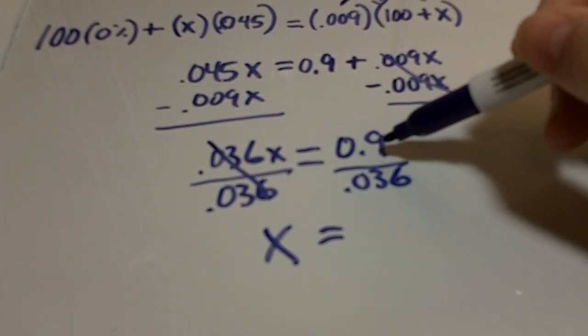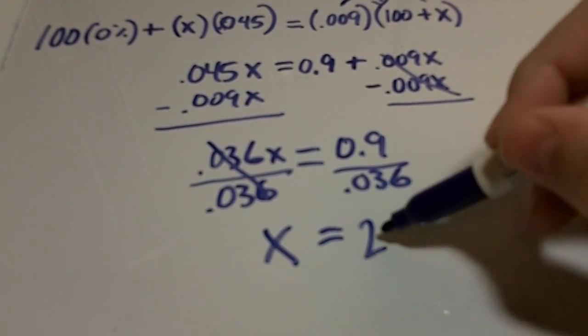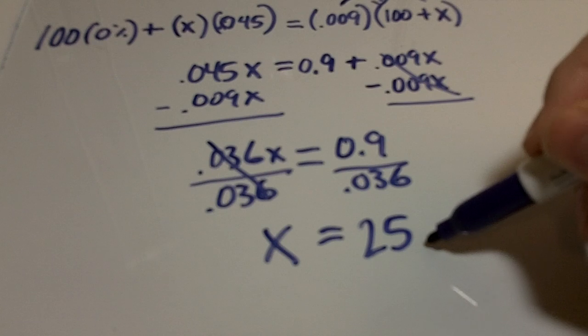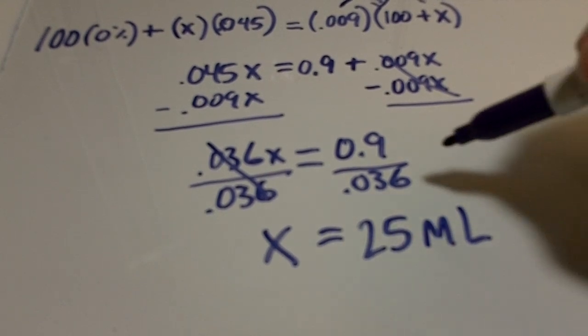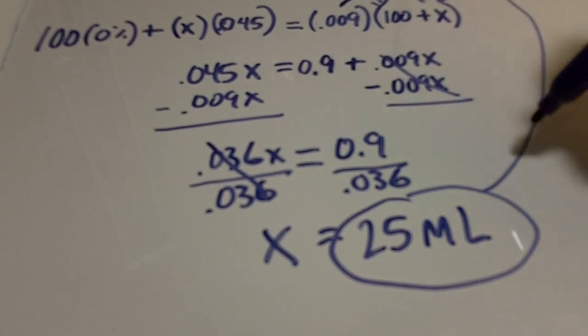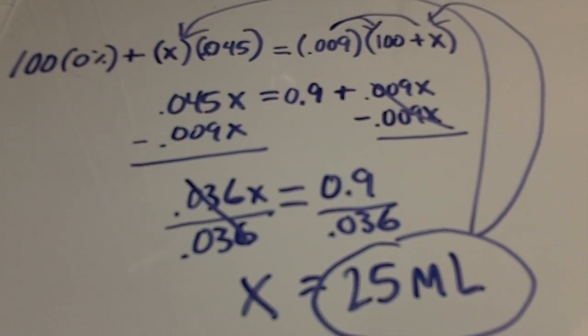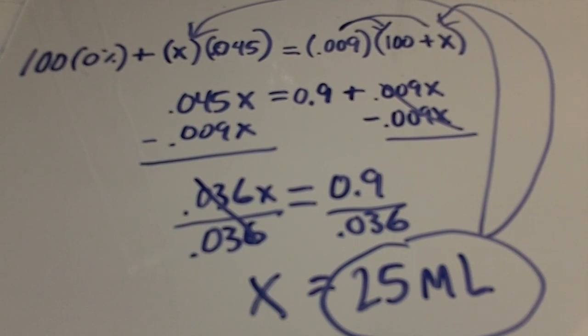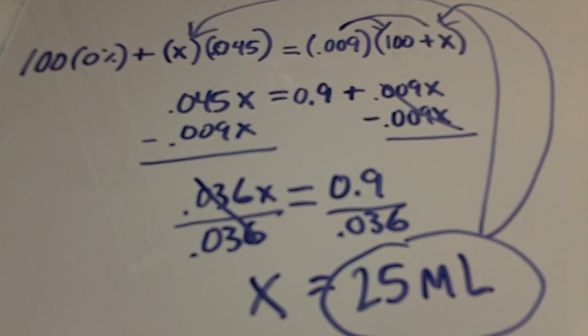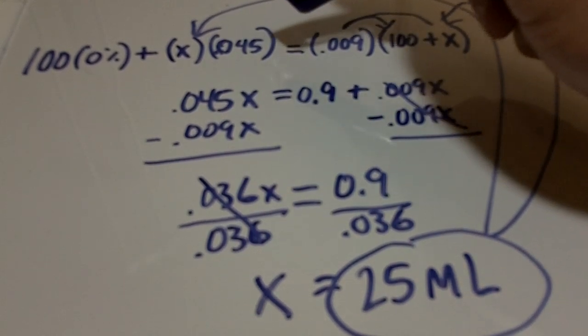And then if you divide 0.9 by 0.036, what you get is 25, which is 25 milliliters in this case because up here it was representing volume—volume of fluid of this 4.5 percent concentration.